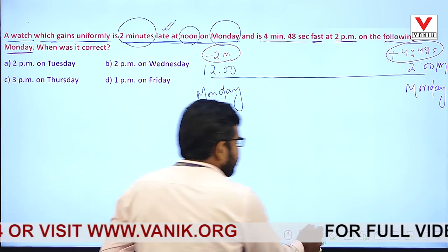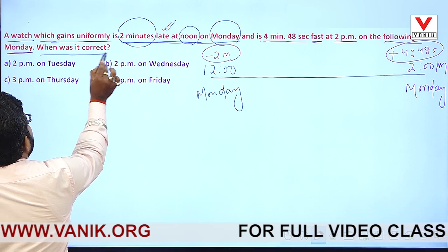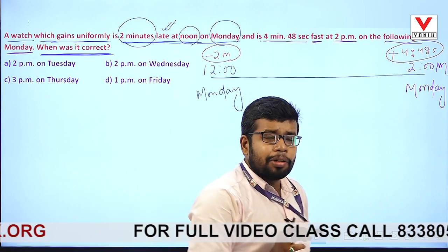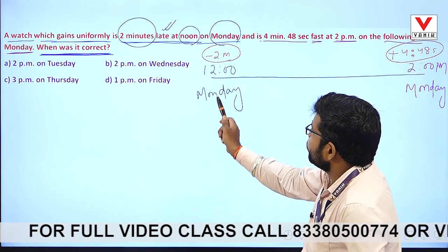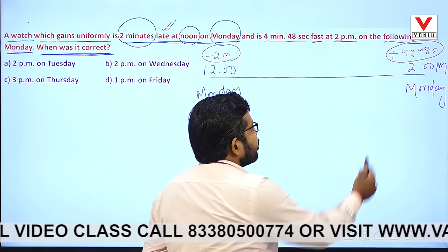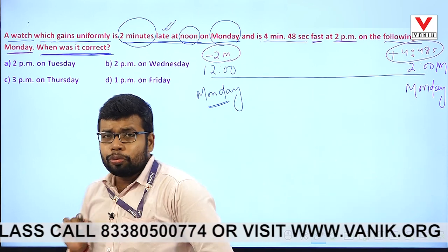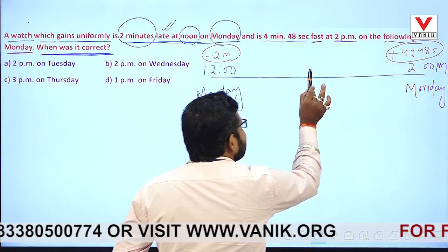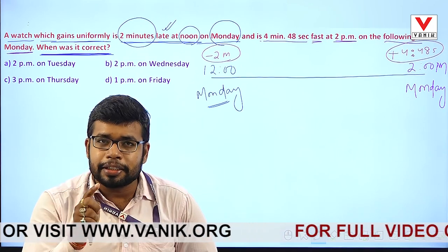Now see what the question is asking. This watch started in the minus — meaning late — and has now become fast. From minus 2 it has gone to plus 4 minutes 48 seconds. The question asks: at what point in between was this watch showing the correct time? That is the one place where the watch was exactly right.